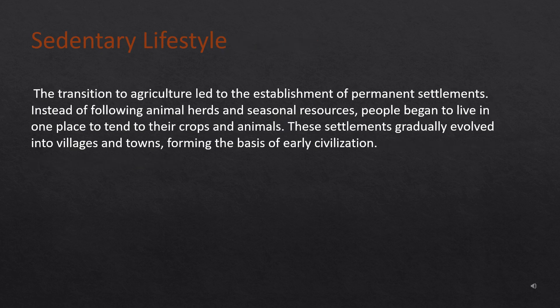Sedentary Lifestyle. The transition to agriculture led to the establishment of permanent settlements. Instead of following animal herds and seasonal resources, people began to live in one place to tend to their crops and animals. These settlements gradually evolved into villages and towns, forming the basis of early civilization.